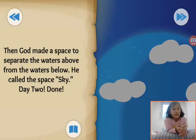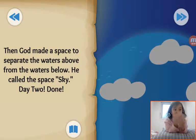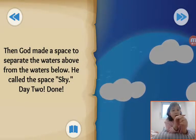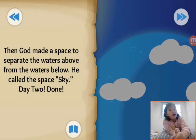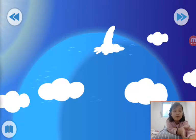Then God made a space to separate the waters above from the waters below. He called the space sky. Day two, done! So, God made a space to separate the waters above, and He called the space sky. Day two, done!